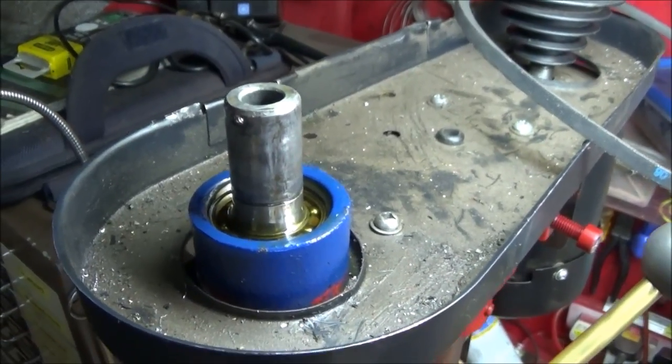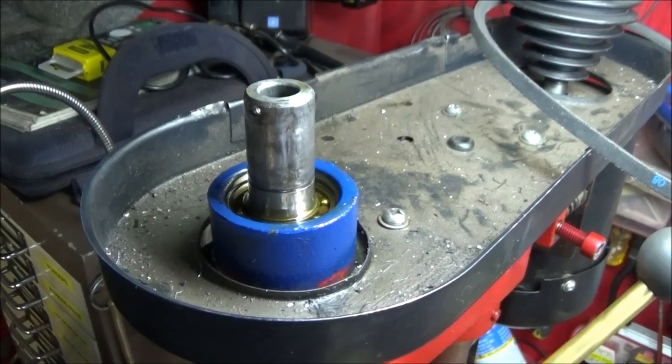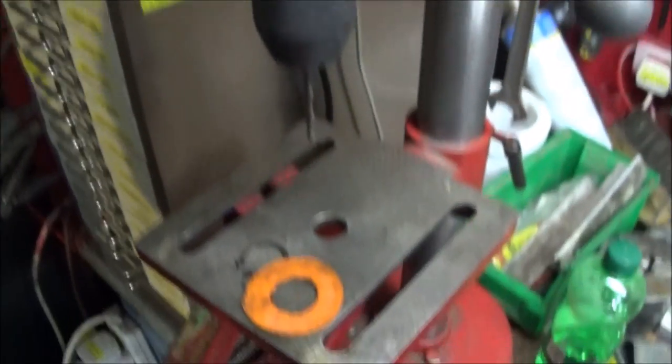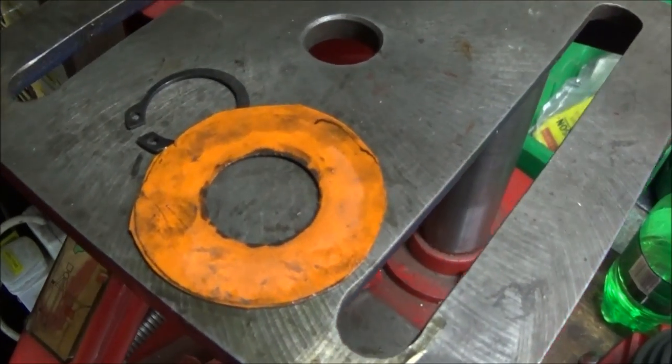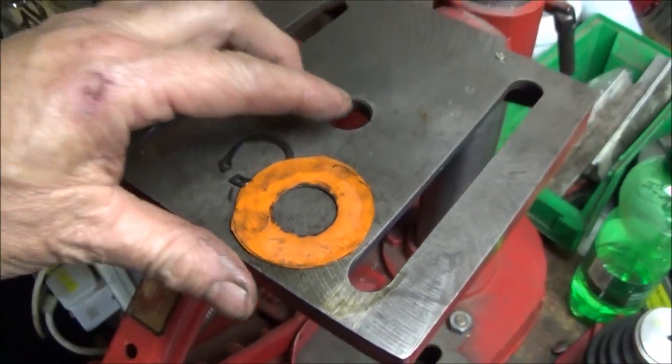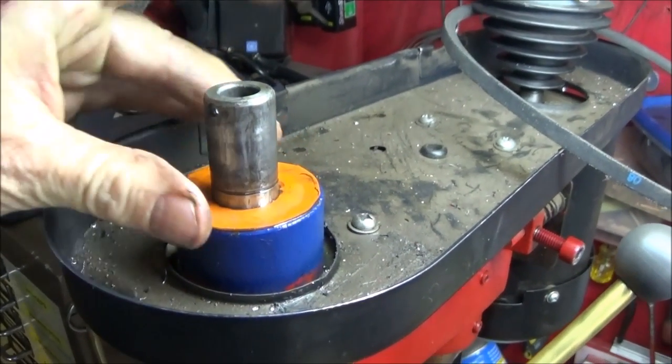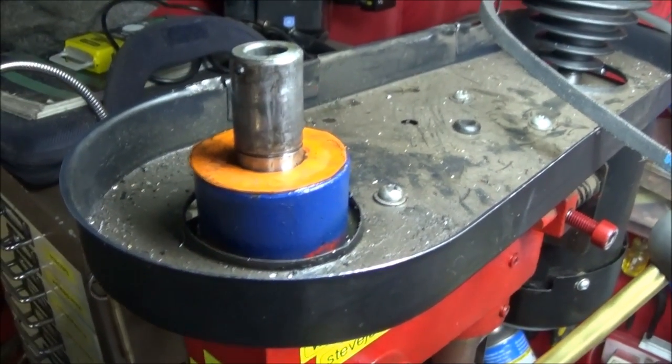And to prevent any dust or dirt getting into the bearing or any of that oil splashing out when the machine is running, I've made a simple seal out of a piece of gasket to fit the spindle and the diameter of the casting. That one drops on there like that and just seals that in.